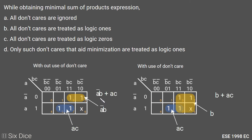So the complete minimization of this three-variable K-map without using don't care is ā·b + a·c.